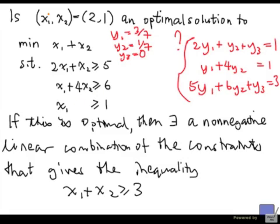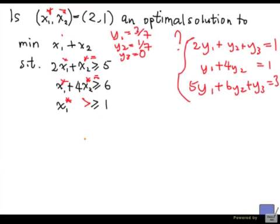So if I call this x1 star x2 star, x1 star is actually strictly greater than 1, whereas these are all equal. The thing is, when you take this linear combination of these constraints,